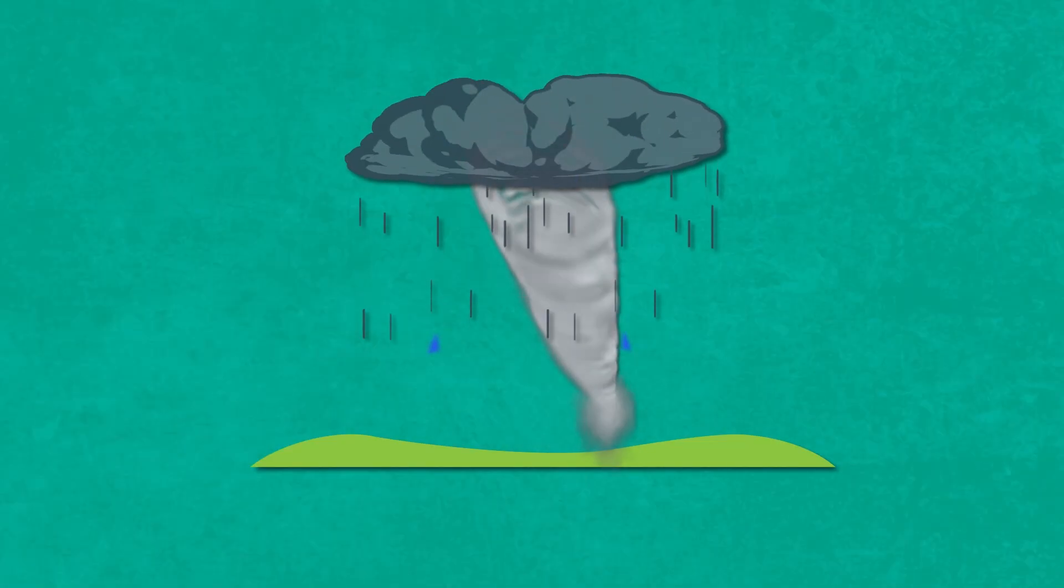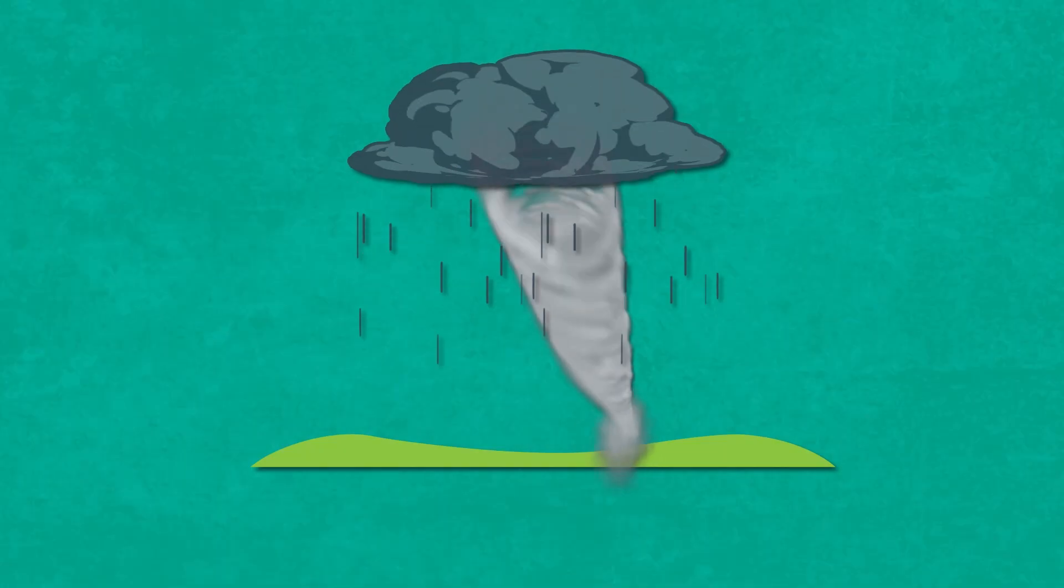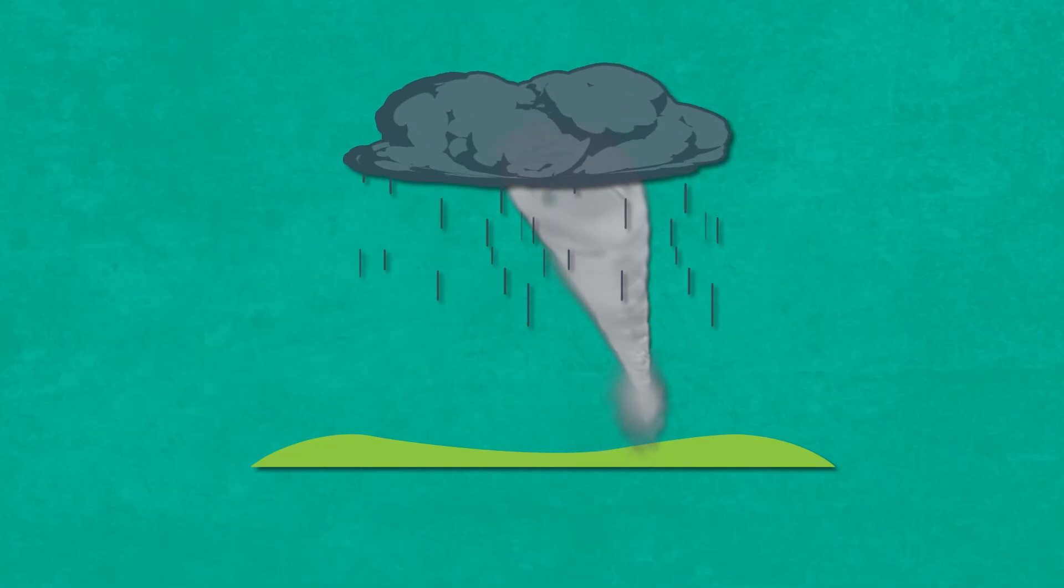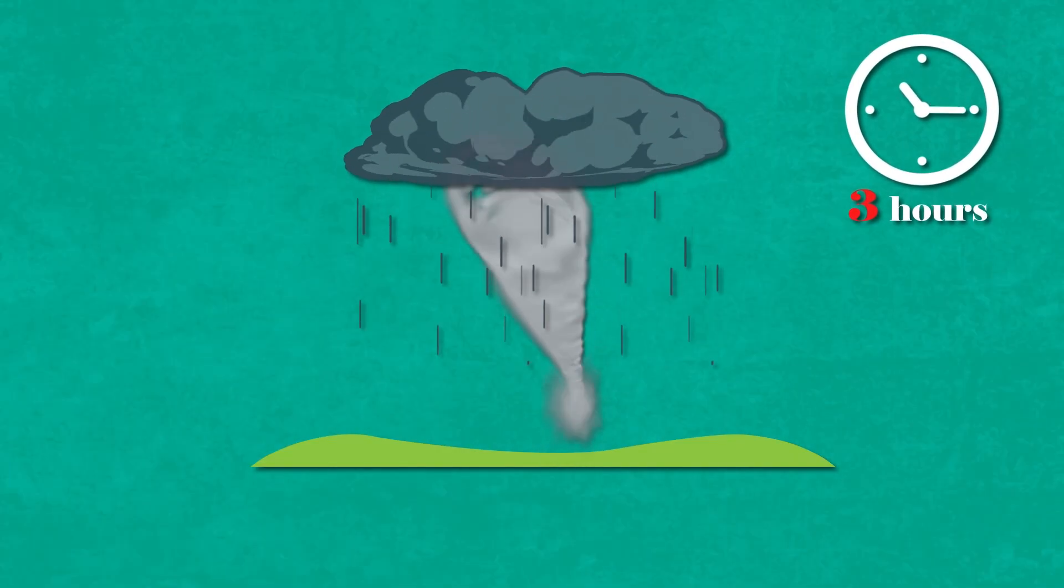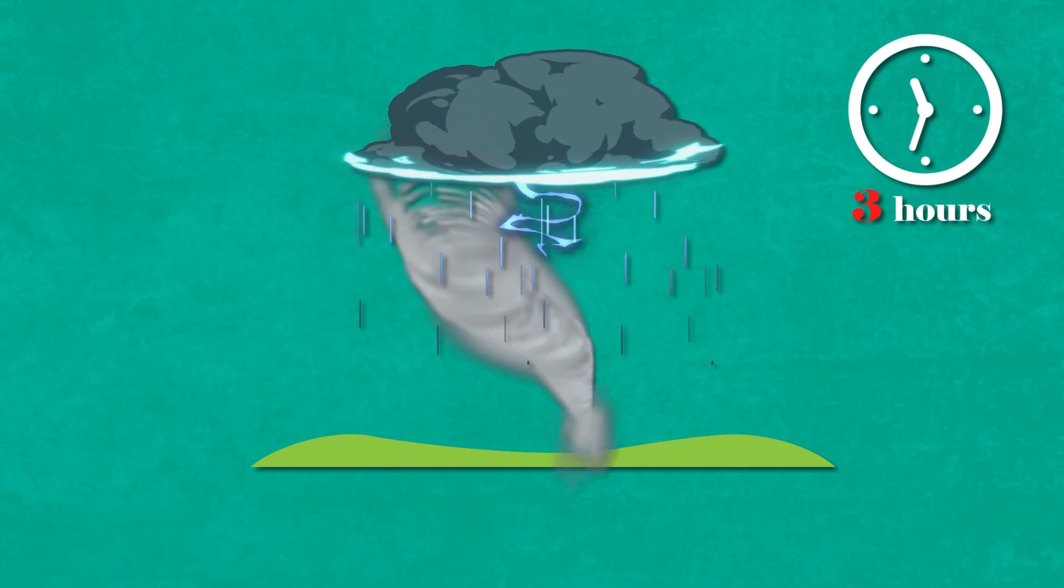Once the storm hits the ground and becomes a tornado, anything can happen. Some last only a matter of seconds, and then they die out. However, the truly scary tornadoes can run rampant for as long as three hours, laying waste to everything in its path.